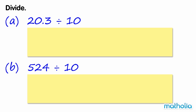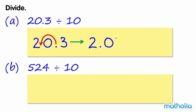Divide. A. 20.3 divide 10. We can divide by 10 by shifting the decimal point one place to the left. 20.3 becomes 2.03. So 20.3 divide 10 equals 2.03.